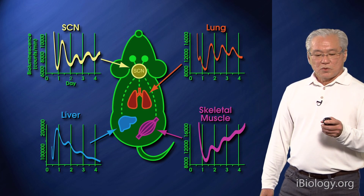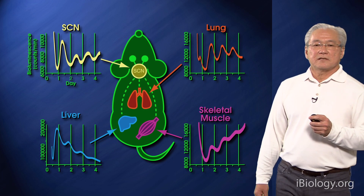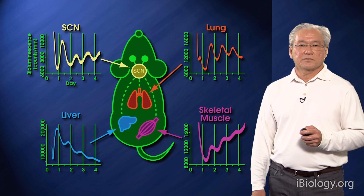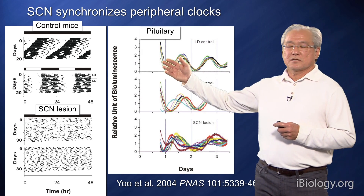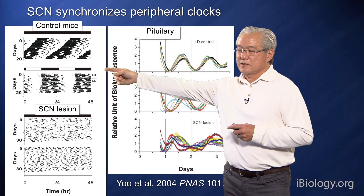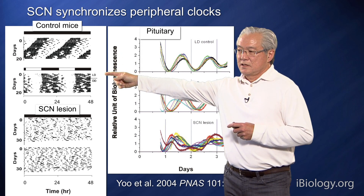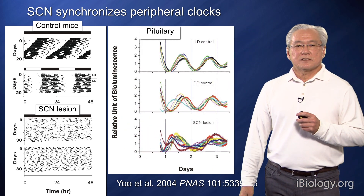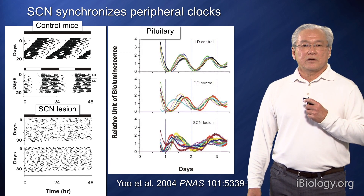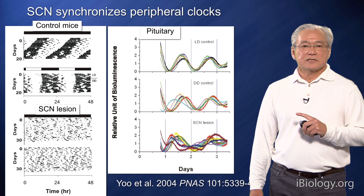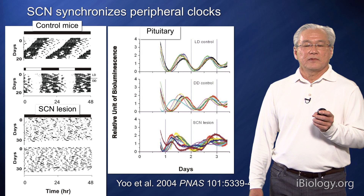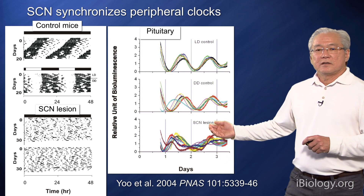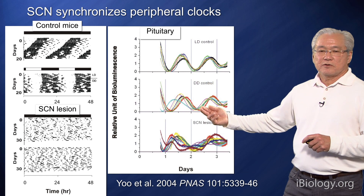Going back to the organization of circadian rhythms — how is it that rhythms are really synchronized and orchestrated throughout the entire organism? We know that the SCN is still in charge. In these experiments shown on the left, these are records of control mice, and at the bottom are records of SCN-lesion mice. SCN lesioning disrupts the behavioral rhythm. With PER-LUC recording of peripheral tissues, we can ask what is the effect of lesioning the central clock on peripheral rhythms. Shown here are PER-luciferase tracings from the pituitary, a peripheral oscillator, and in intact mice the pituitary gland rhythms are very normal in either light-dark cycles or in constant darkness.